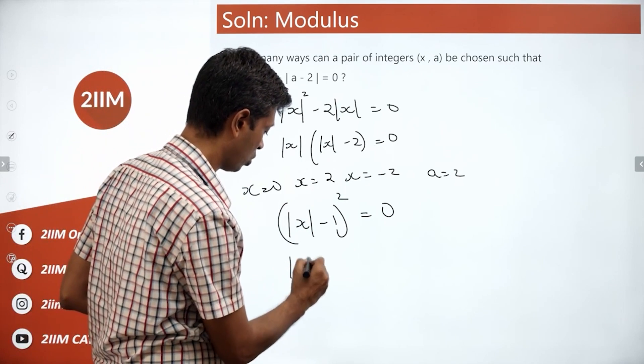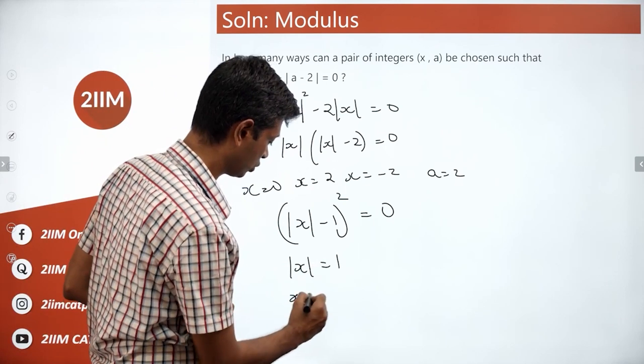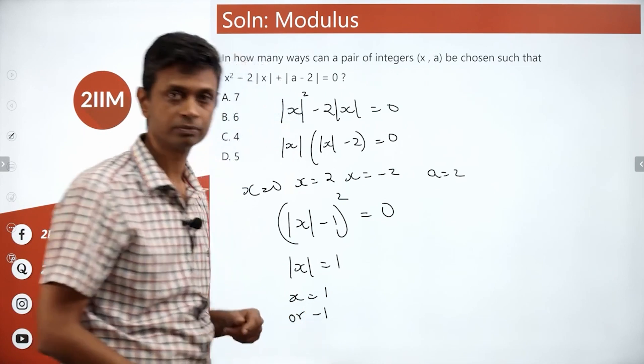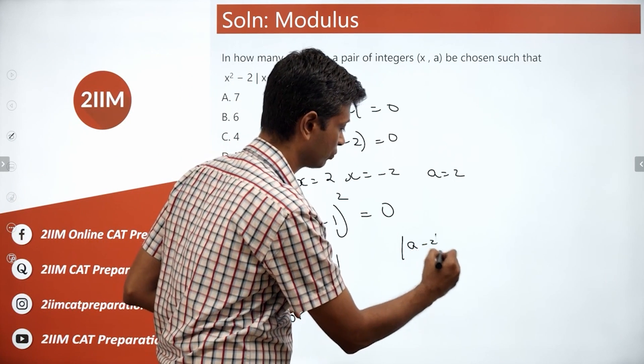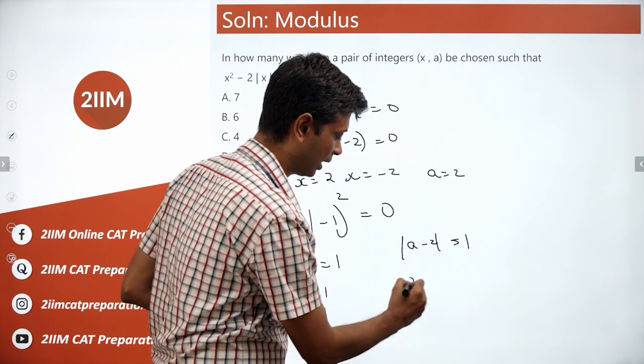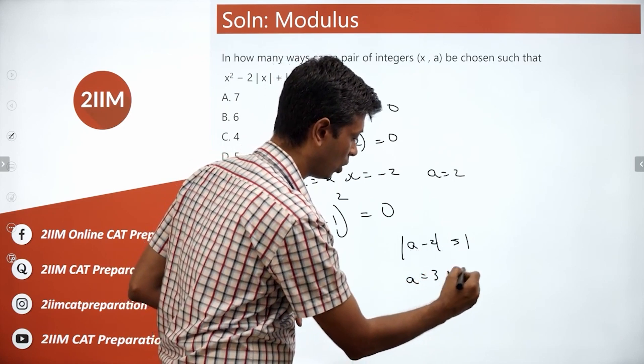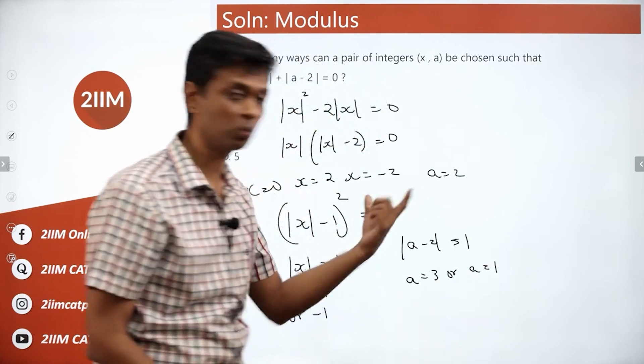Mod x minus 1 whole square is 0, so mod x is 1. X could be 1 or minus 1. This is the scenario when modulus of a minus 2 is 1, or a is 3 or a is 1.